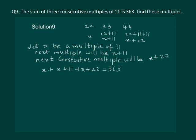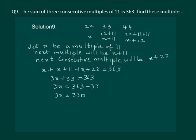Now let us solve this linear equation in one variable. Adding like terms, we get 3x plus 33 equal to 363. So 3x is equal to 363 minus 33, which gives 3x is equal to 330. Dividing by 3 on both sides, we get x equal to 110.